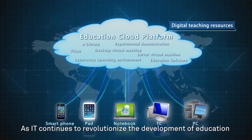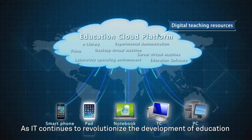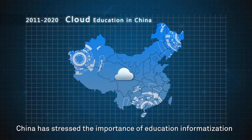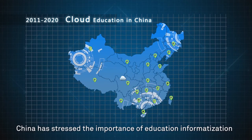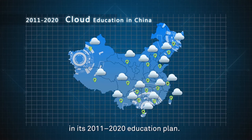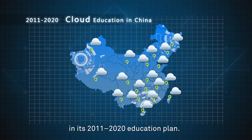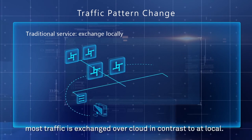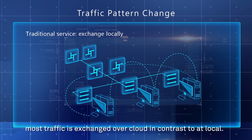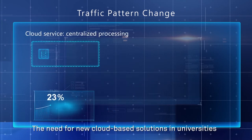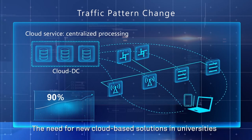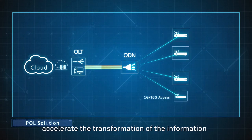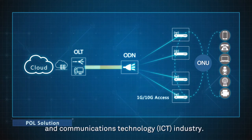As IT continues to revolutionize the development of education, China has stressed the importance of education informatization in its 2011-2020 education plan. Following this, most traffic is exchanged over cloud in contrast to local. The need for new cloud-based solutions in universities is therefore expected to accelerate the transformation of the Information and Communications Technology industry.